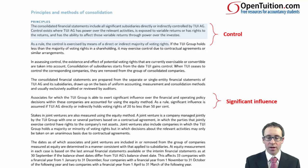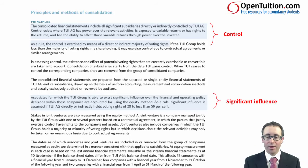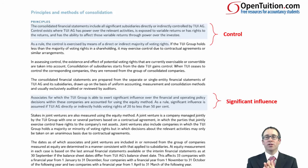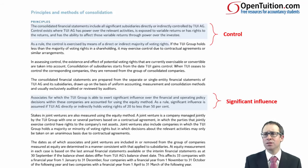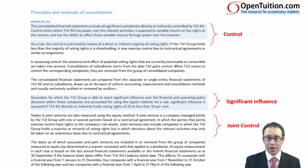Further down, it talks about influence — obviously dealing with associates. Associates with the TUI group, where TUI is able to exert significant influence over the financial and operating policies, are accounted for using the equity method. As a rule, significant influence is assumed if directly or indirectly TUI holds 20 to 50%. Obviously there could be situations where TUI owns less than 20% but there are material transactions, or they've given key management personnel to that entity, or they have seats on the board giving the power to participate.